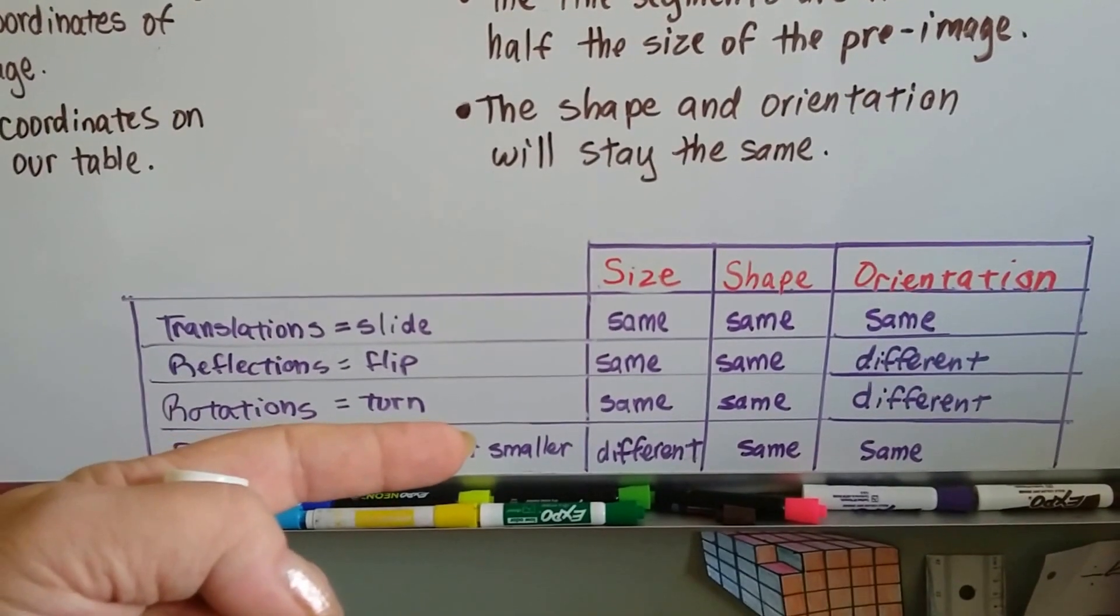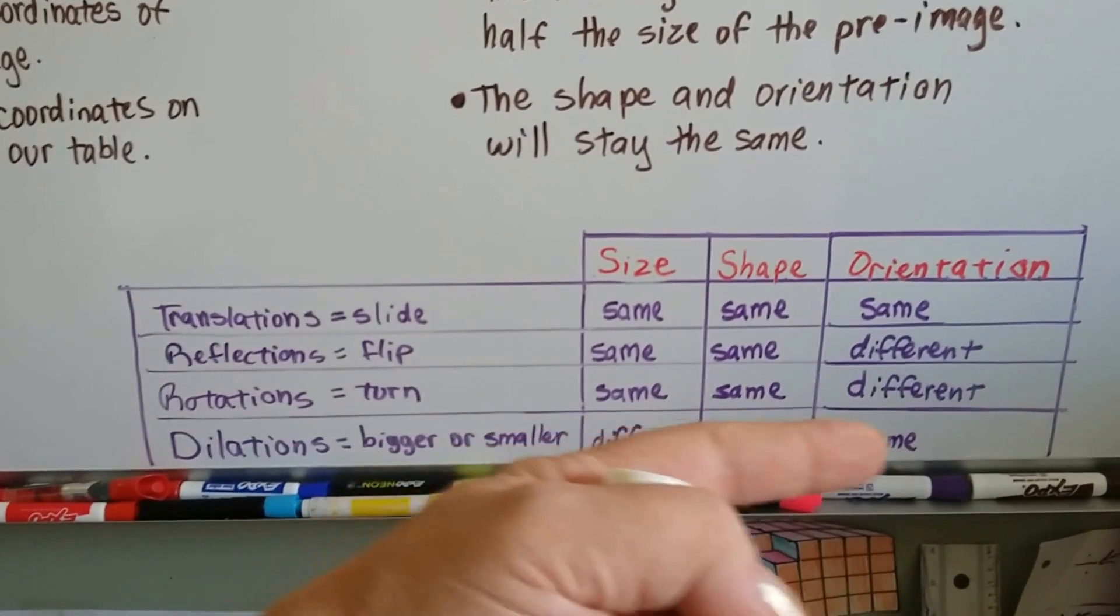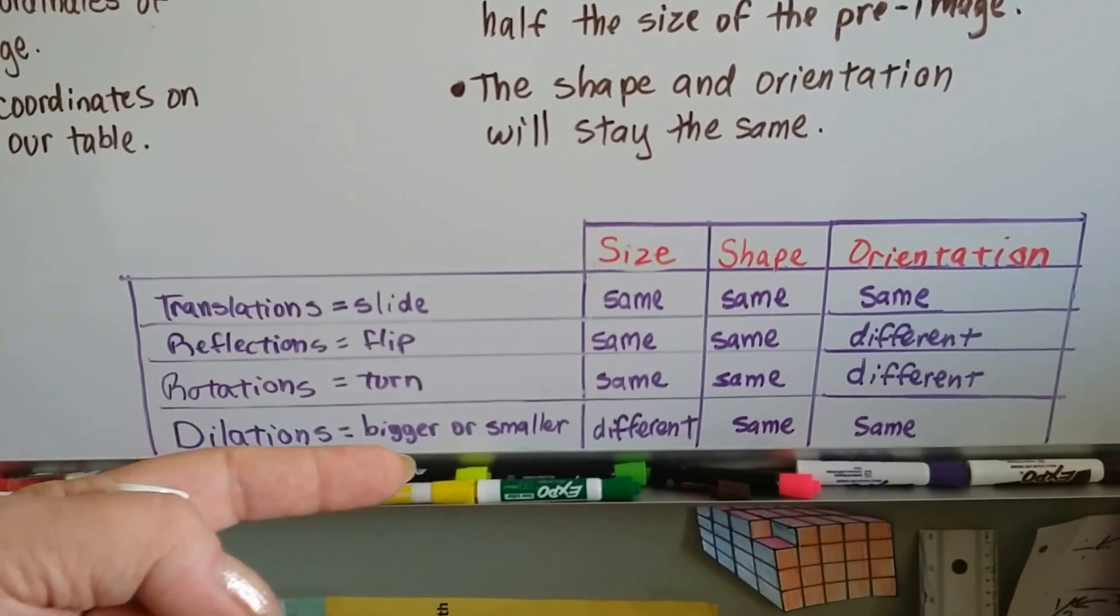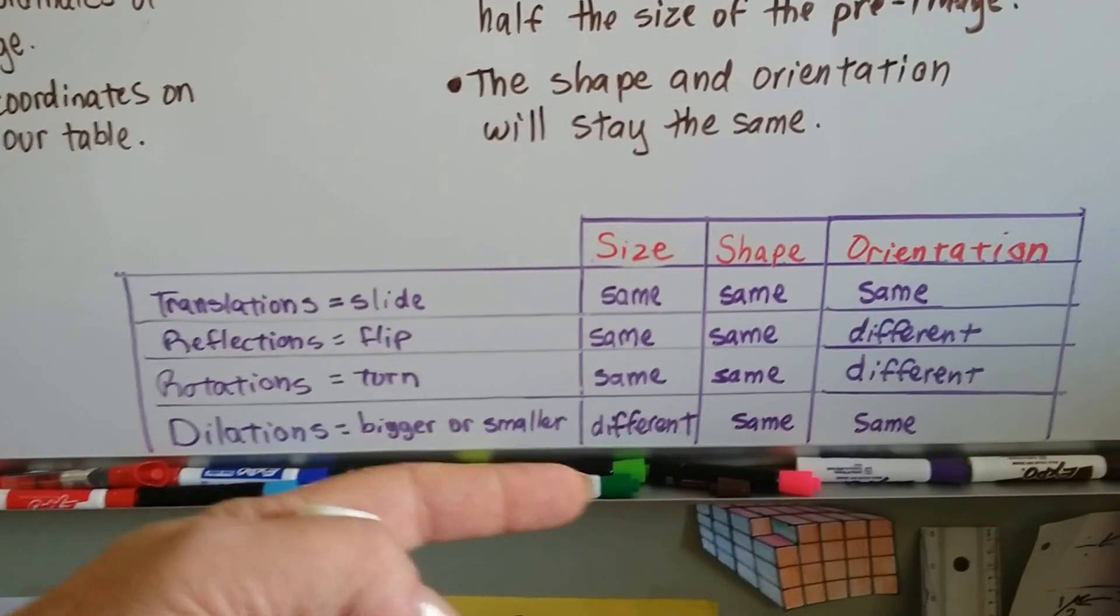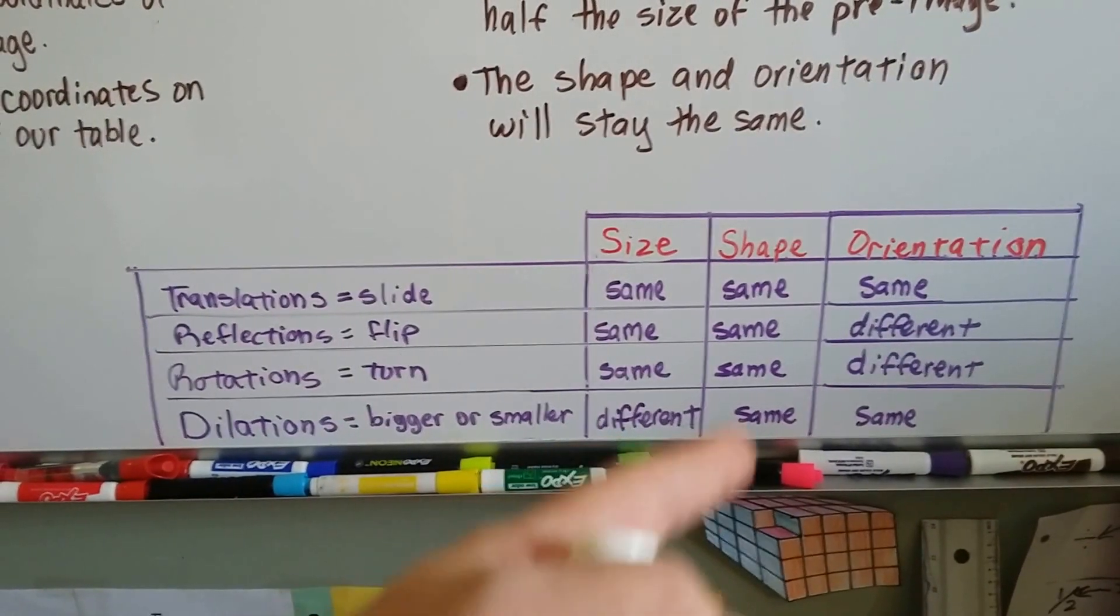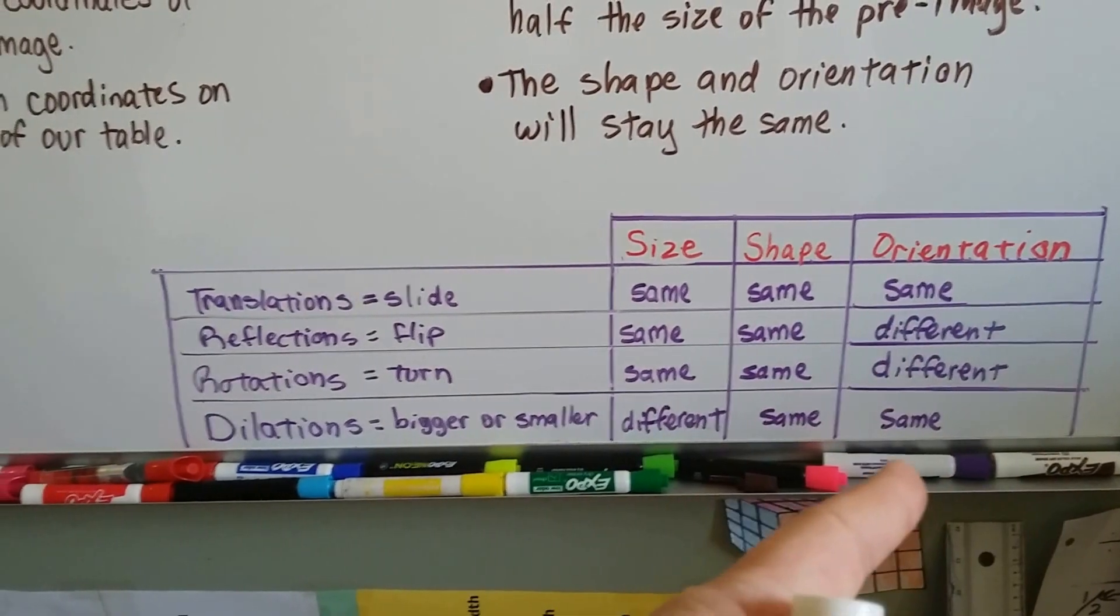In rotations, that's a turn. The size and shape were the same, but the orientation was different because it turned. And now, in dilations, they can become bigger or smaller. The size is different for the first time. See that? But the shape and the orientation stay the same.